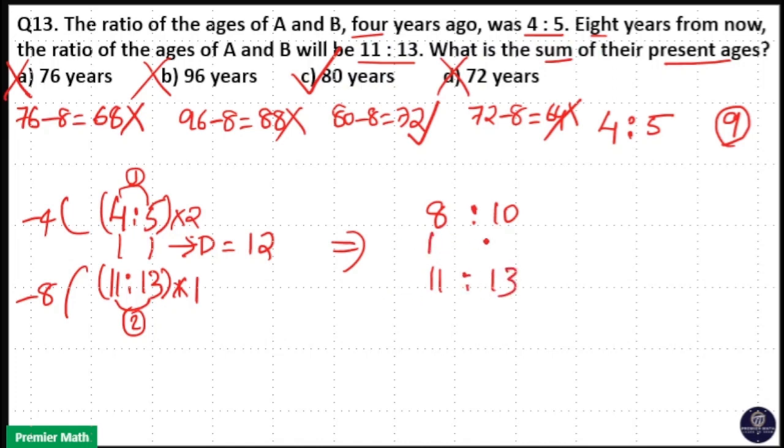Now you can see the difference between 8 and 11, and 10 and 13, is the same. That is 3 units. 3 units is equal to 12 years. That is 1 unit is equal to 4 years. So four years ago, the ages will be 8 into 4 and 10 into 4. That is 32 and 40.